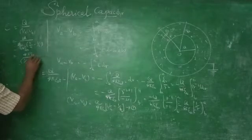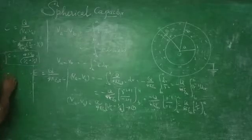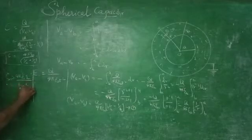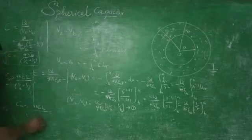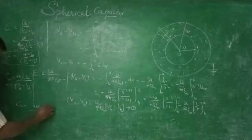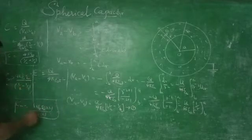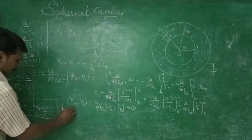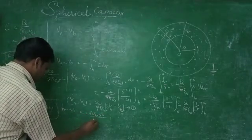For vacuum, C equals 4 pi epsilon naught divided by (1/a minus 1/b). For a medium, C_m equals 4 pi epsilon naught epsilon R divided by (1/a minus 1/b). Simplifying, 1/a minus 1/b equals (b minus a) over ab, so C equals 4 pi epsilon naught times ab divided by (b minus a).